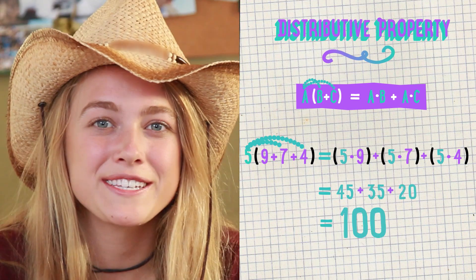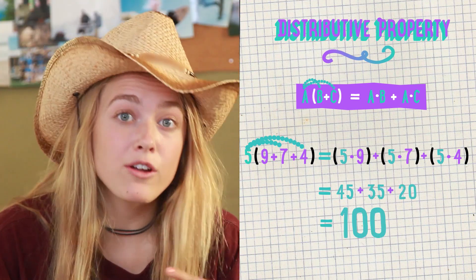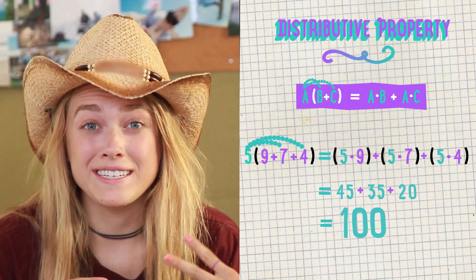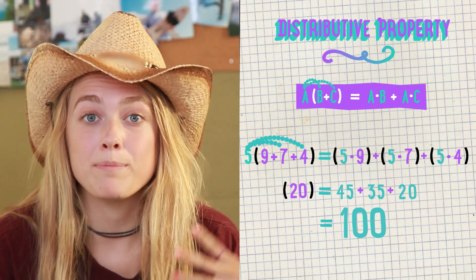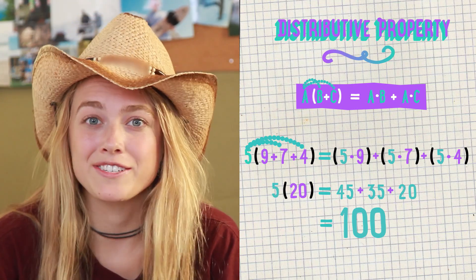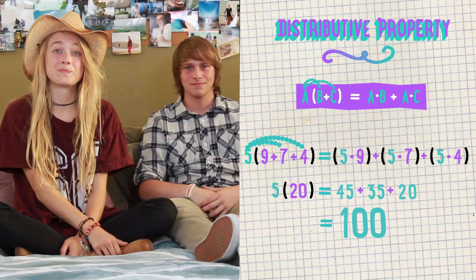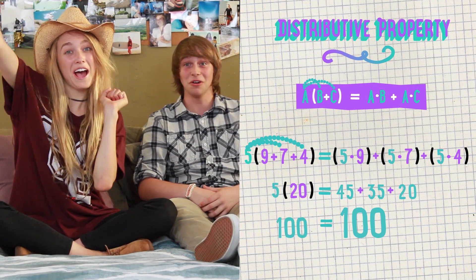To see if the distributive property works, we could add all the numbers in the parentheses together to get 20, and then multiply 20 by 5 to get our answer, which equals 100! The distributive property doesn't change the value of the number — it's just a different way of getting our answer by multiplying every number.